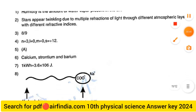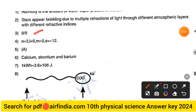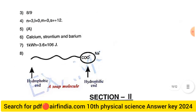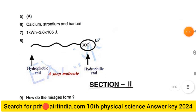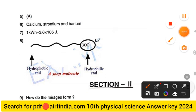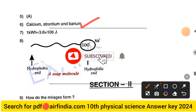Question 3 answer: The refractive index of water relative to glass is 8/9. Question 4 answer: For the differentiating electron of the sodium atom — n = 3, l = 0, m = 0, and s = +1/2. Question 5 answer: Option A. Question 6 answer: Calcium, Strontium, and Barium (Dobereiner's Triad).